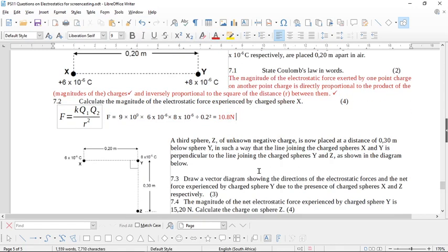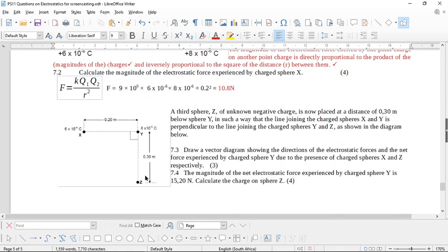Now it says to you a third sphere of unknown negative charge is now placed at a distance of 0.3 meters below sphere y, in such a way that the line joining charge spheres x and y is perpendicular to the line joining charge spheres y and z, as shown in the diagram below. So draw a vector diagram showing the directions of the electrostatic forces and net force experienced by charge sphere y due to the presence of x and z. So we need the two forces and the net force.